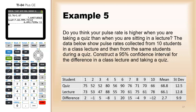We'll try one more example. Do you think your pulse rate is higher when you're taking a quiz than when you're sitting in a lecture? The data below shows pulse rates collected from 10 students in a class lecture and then from the same students. That word same means that we're going to deal with paired data. And it's during their quiz. So, let's construct a 95% confidence interval for the difference in class lecture and taking a quiz. And you see the results.